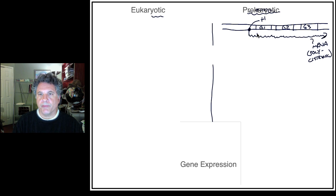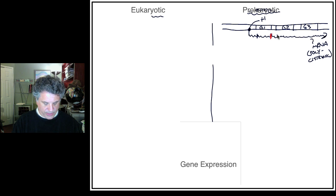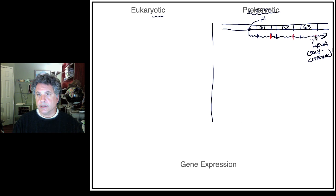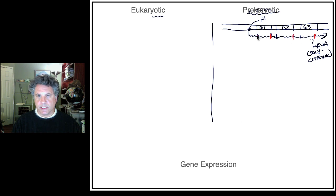The plus one is the start of transcription. There is a start of translation for gene 1 and a stop of translation for gene 1 — stops are indicated in red. There is a start and stop of translation for gene 2, and a start and stop of translation for gene 3. So in the messenger RNA transcribed from an operon, there are coding sequences for three different proteins.